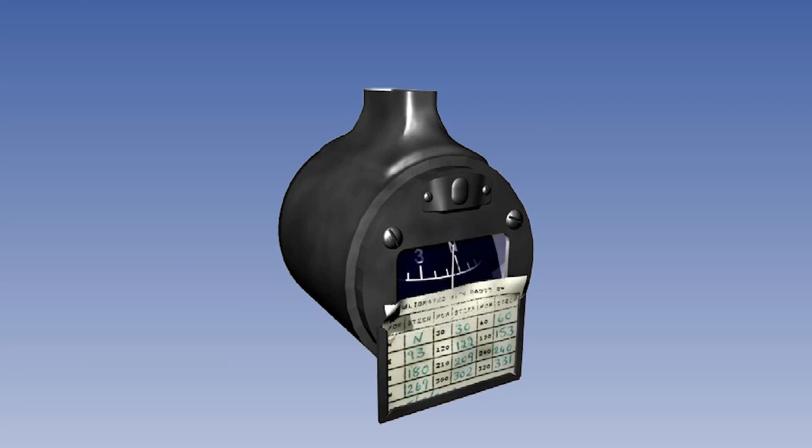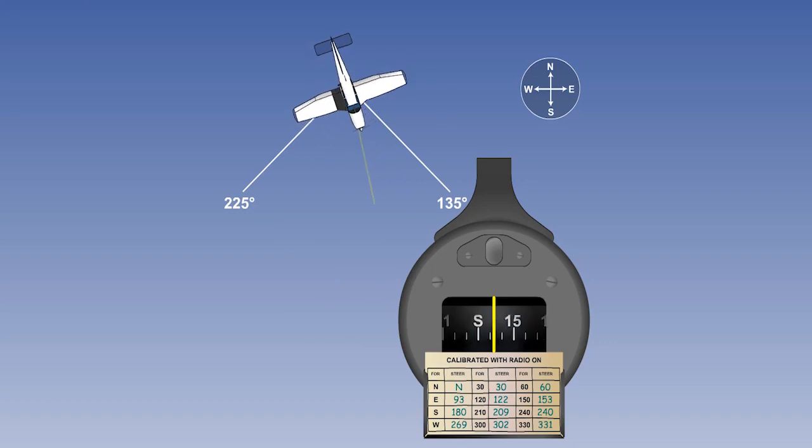The direct reading compass has three major limitations. These are, firstly, turning and acceleration errors. The compass cannot be read accurately during a turn.